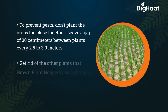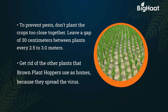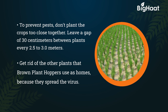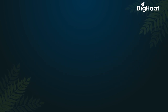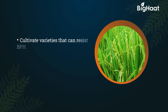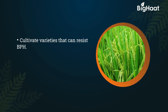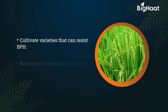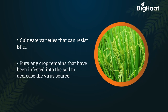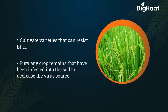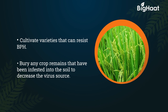Get rid of other plants that brown plant hoppers use as a home, because they spread the virus. Cultivate varieties that can resist BPH. Bury any crop remains that have been infested into the soil to decrease the virus source.